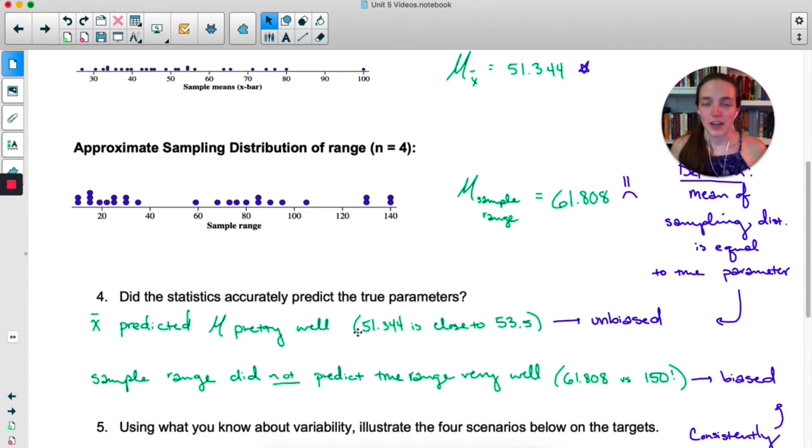So most of the time I'm going to get like 20, 30, 35. And every now and then I get like two extreme Pokémon and I end up with something closer to the true range. Now when we're talking about biased and unbiased estimators, this is different than the bias associated with sampling methods. So two units ago we talked about like non-response and wording of the question and voluntary response and convenience sampling. Those are all types of bias that have to do with your sampling methods. This type of bias is telling us if a statistic is good at predicting a parameter.